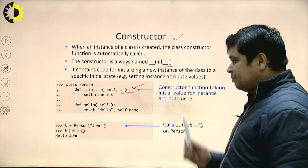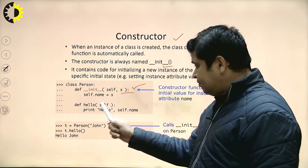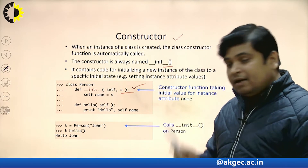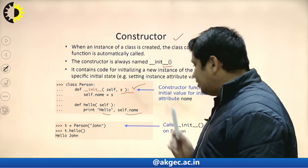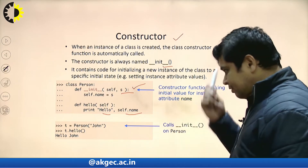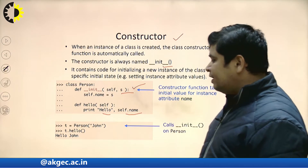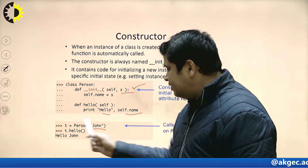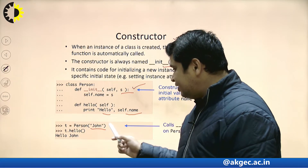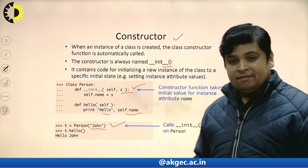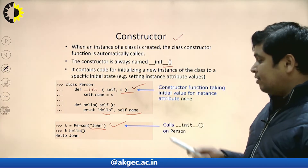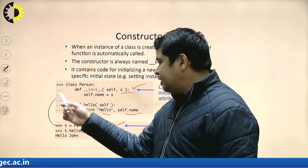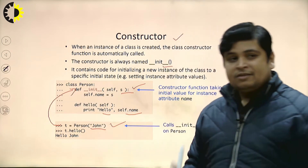This Person class contains one constructor and one function. The function name is hello, and inside the function hello I am going to print hello and the name of a particular person object. Now, t is the object of the Person class. When this line is executed, this is treated as object creation — I am going to declare one object t equal Person. When this line will be executed, immediately constructor is automatically called.